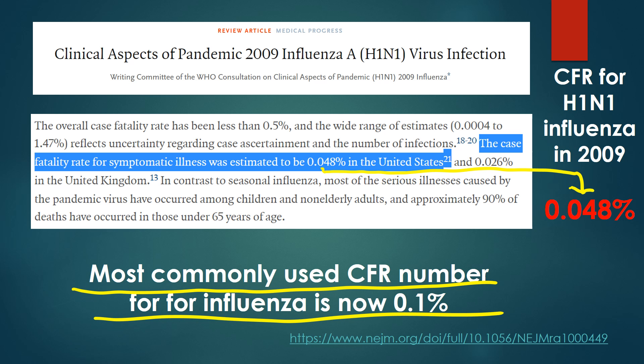Now, let's try to find published data about case fatality ratio for flu. The last flu pandemic happened in 2009 and was caused by H1N1 virus, also known as swine flu. In this New England Journal of Medicine paper from May 6, 2010, we can find this number: it is 0.048%. But the most commonly used CFR number for influenza is 0.1%, and I actually don't know where it comes from.